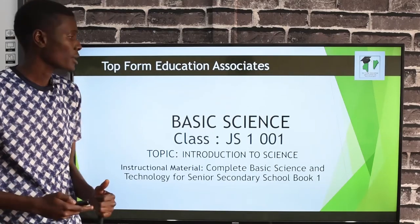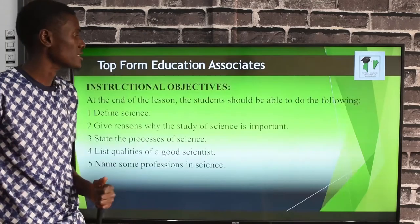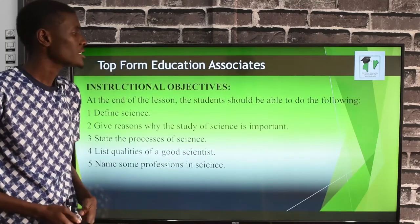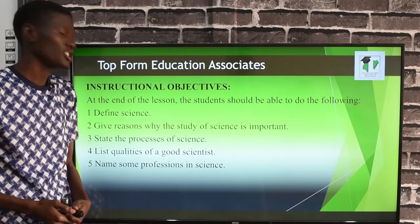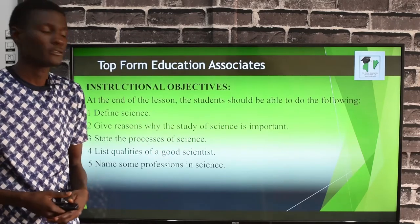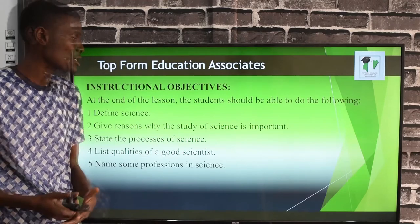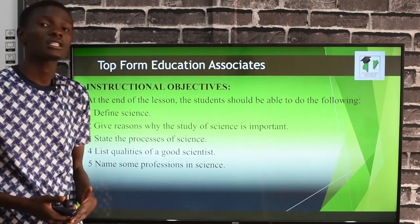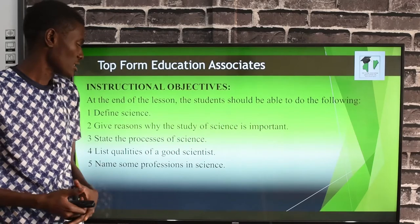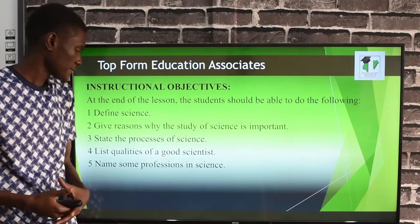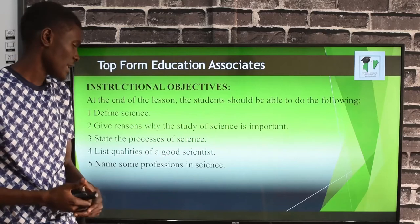Let's see our lesson objectives. By the end of this lesson you should be able to define science, give three reasons why the study of science is important, state the processes of science, list the qualities of a good scientist, and name some professions in science.